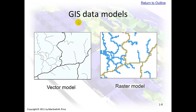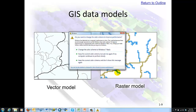GIS data models. We're going to learn about vector data models, which we use most of the time during this course, and also raster data models. This over here is a raster that was created from a vector. Vectors are points, lines, and polygons. Rasters are individual grids — this is a cell, this is a cell, this is a cell.